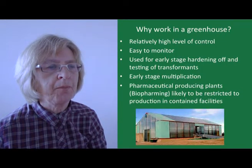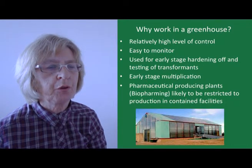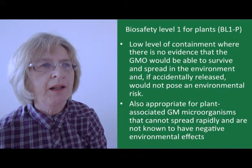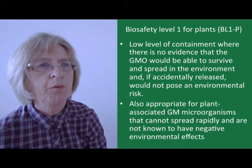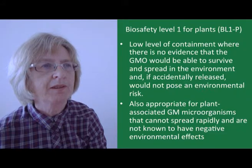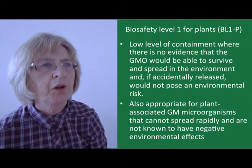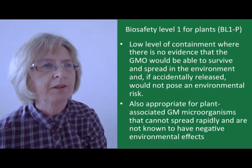One type of GM plant that might remain in the greenhouse, depending on the risk assessment, is plants producing pharmaceuticals or vaccines, where commercial production could well be undertaken in a contained facility. Containment level 1 for plants, generally known as BL1P, involves a low level of containment where there is no evidence that the GMO would survive and spread in the environment, and if released accidentally, would not pose an environmental threat. It's also appropriate for GM microorganisms associated with plants that can't spread rapidly and aren't known to have negative environmental effects.